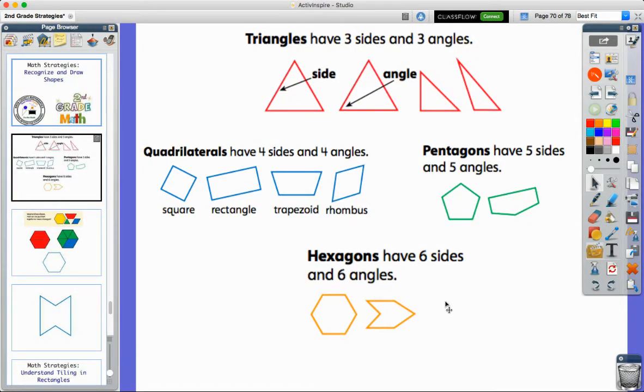In the last group, we focus on hexagons. The hexagon right here - if it was red and said 'stop' on it, you'd recognize it as a stop sign, but it's a hexagon. It has six sides and six angles, or six spots where the lines come together. This one is also a hexagon, even though it has a little bit of a different shape.